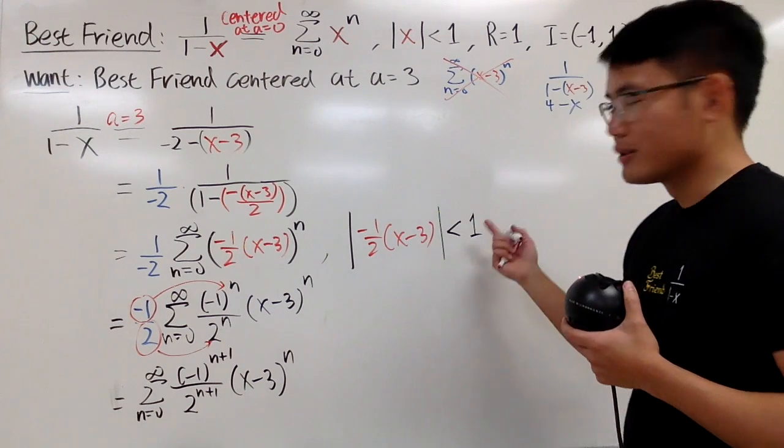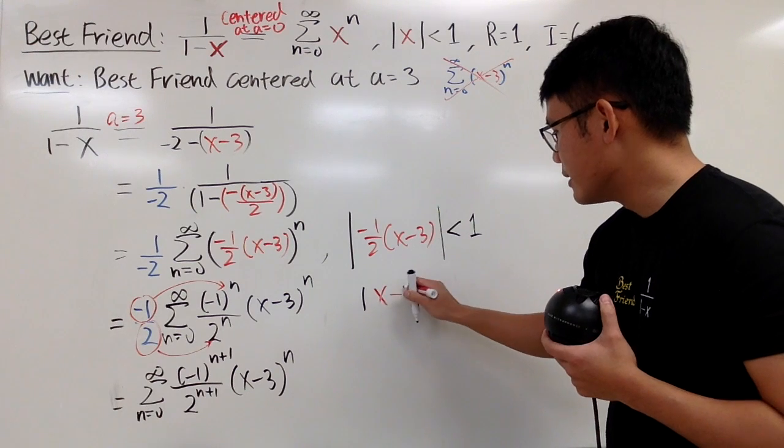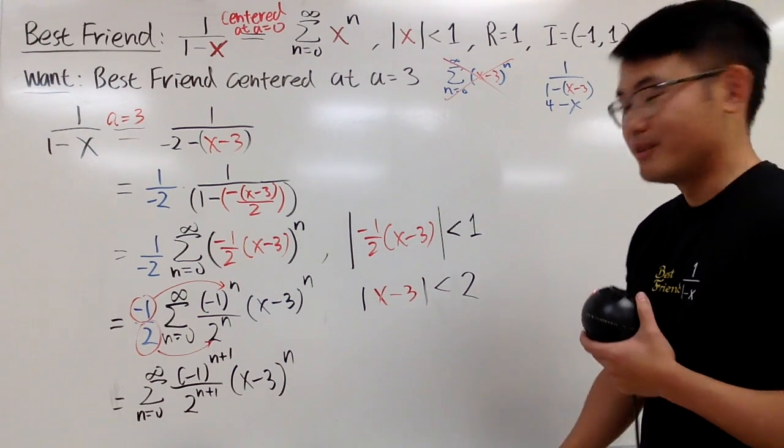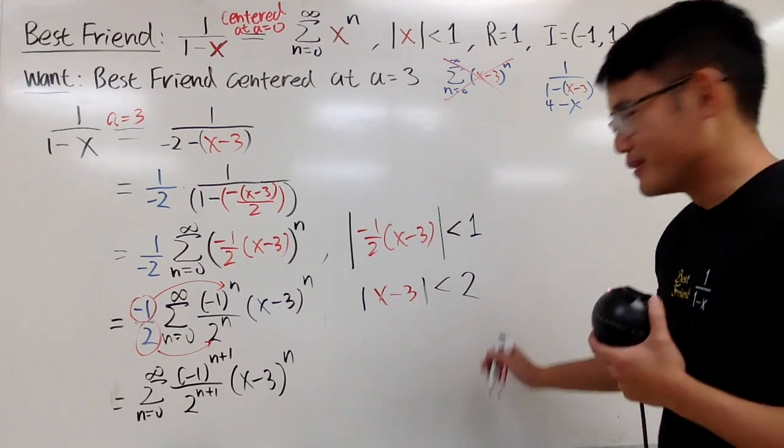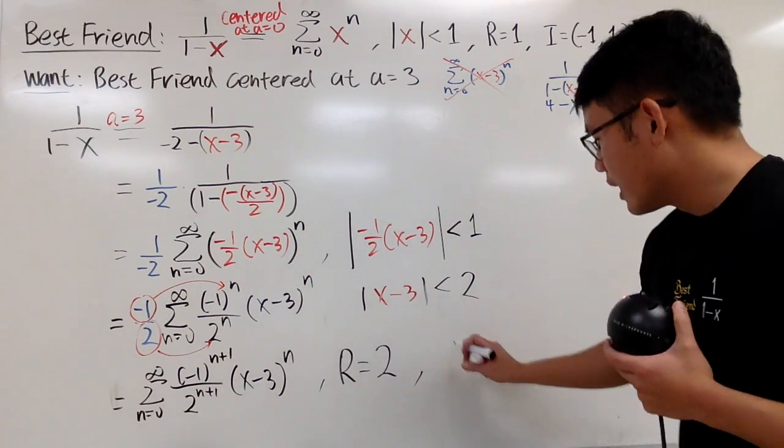So, you see this is just the absolute value of x minus 3, multiply both sides by 2, so this is less than 2. That's pretty much it. Very nice. R is 2, right? The radius of convergence is 2.